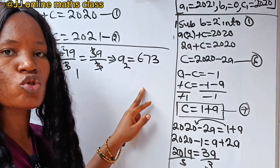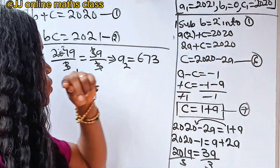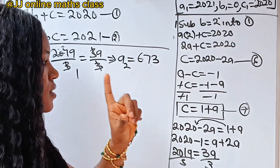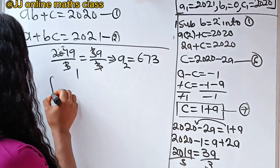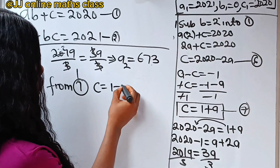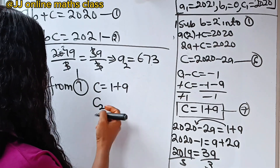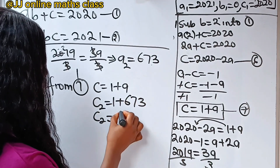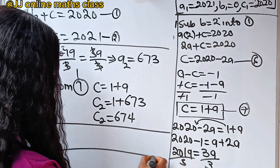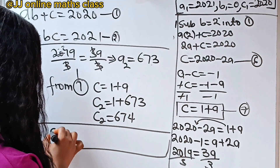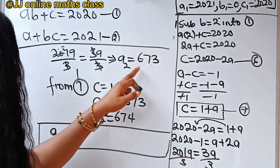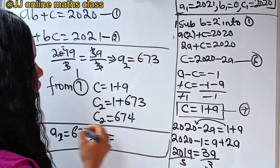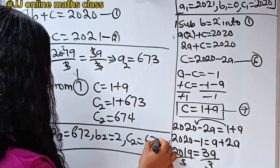So A2 is 673 and B2 is 2. From equation 7, C equals 1 plus A, so C2 equals 1 plus 673, which means C2 equals 674. So our second solution is A2 equals 673, B2 equals 2, C2 equals 674.